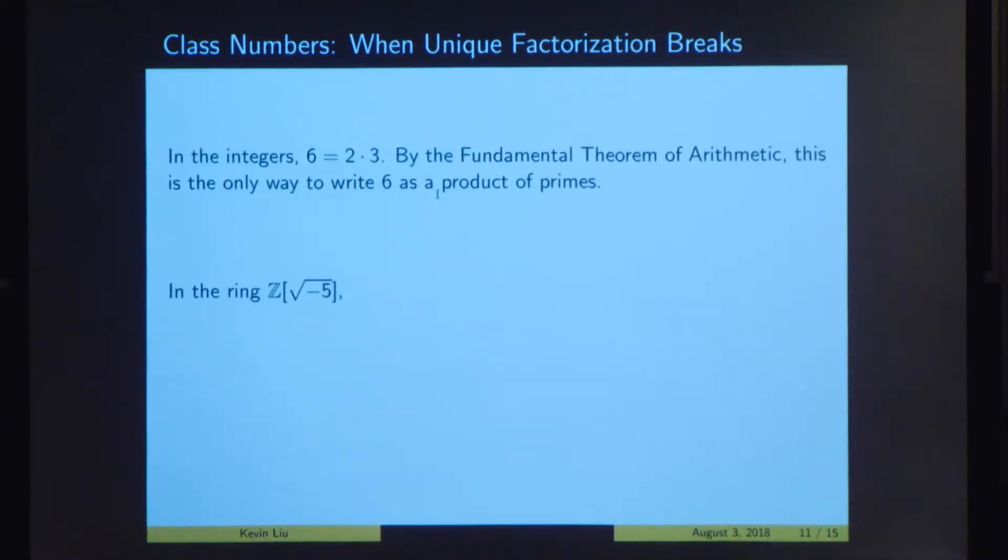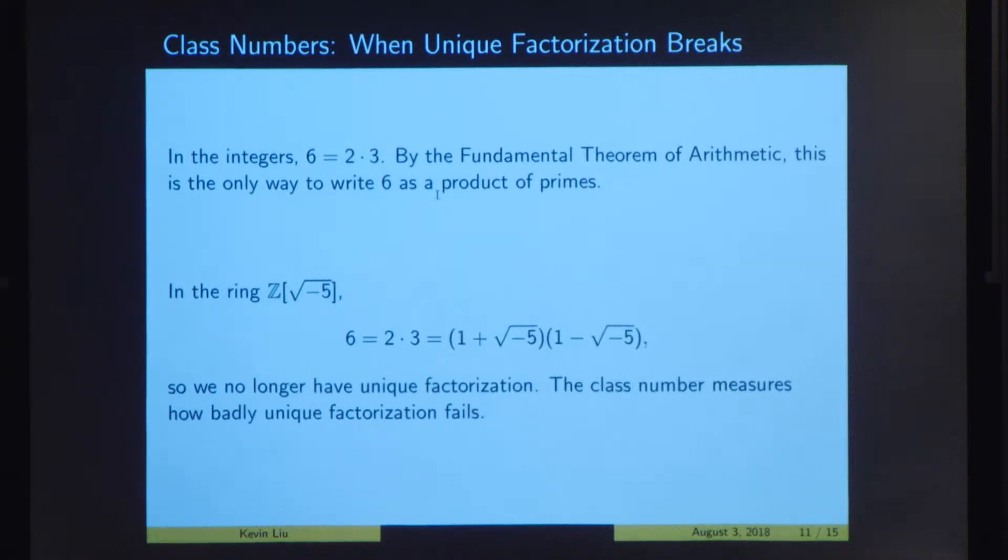So one interesting property of number fields that we want to study is the class number. So the fundamental theorem of arithmetic states that any integer can be uniquely decomposed into a product of primes. So everyone knows 6 equals 2 times 3. And the fundamental theorem of arithmetic tells us there's no other way to write 6 as a product of primes. But what if we work in something other than the integers? So let's look at Z adjoin root negative 5, which is just a set of all numbers of the form a plus b times the square root of negative 5, where a and b are integers. So is there an analog of the fundamental theorem of arithmetic in this ring? The answer is no. So we see we have two different ways to write 6, to factor 6. And these are fundamentally different factorizations in that none of these four numbers can be decomposed further into a product of members of this ring other than like 1 or negative 1.